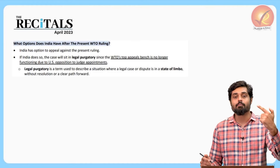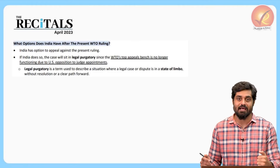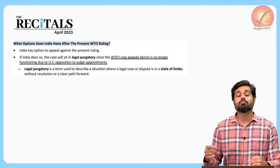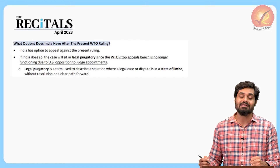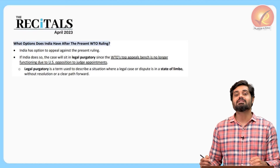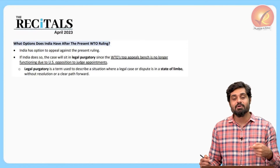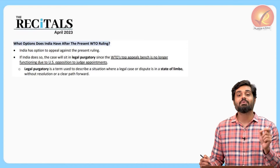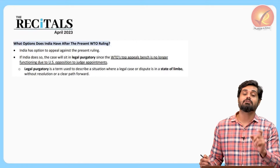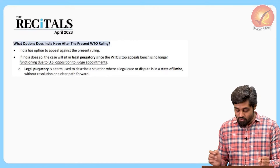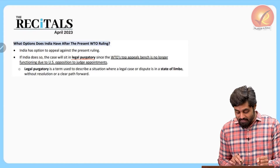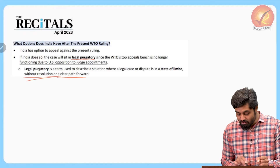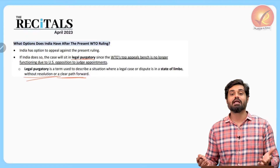India has the option to appeal to the third level — the appellate tribunal. However, the appellate body is not functioning at the moment because its members are not being appointed, due to opposition from the United States. This creates a situation of legal purgatory where there is no clear forward path to resolution of the dispute.